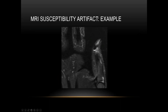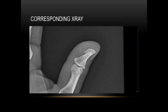Here is an example of an MRI of a thumb showing a susceptibility artifact that appears to indicate a large foreign body — but this is very deceiving. The corresponding x-ray shows a very tiny, perhaps less than one millimeter radiodensity, possibly metallic, that accounts for that artifact.